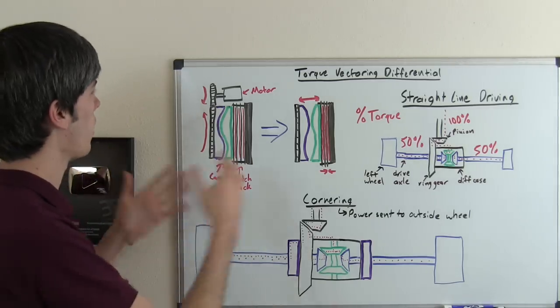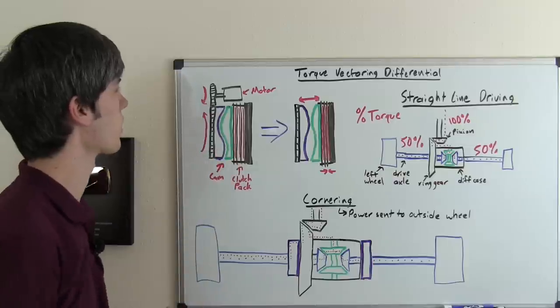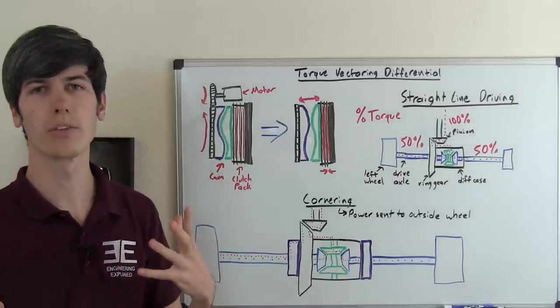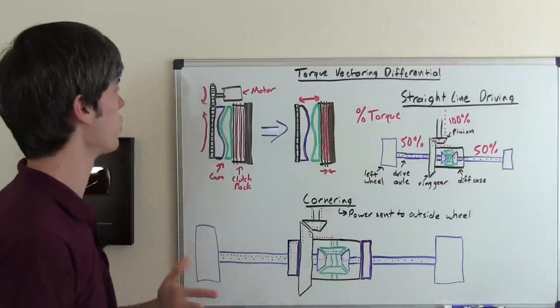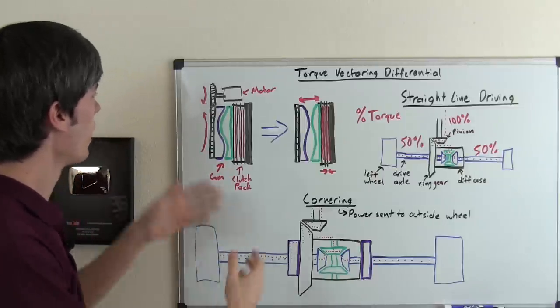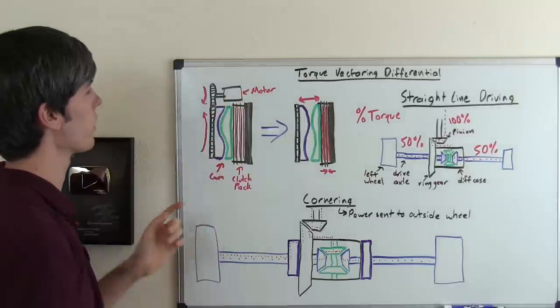Now let's take a look at how that electric motor can actually compress that clutch pack and keep in mind there's different ways of doing this. This is just kind of one of the simple ways to explain it but you could do hydraulic or other methods but what we've got going on here is you've got this electric motor.